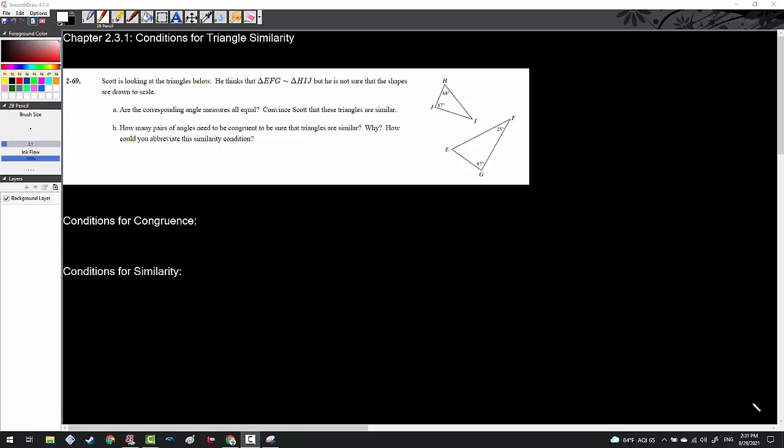The conditions for triangle similarity are very similar to the conditions for triangle congruence in that they involve a set of corresponding angles and sides in some order. Let's review the congruence conditions first. We know that side, side, side is one of them.